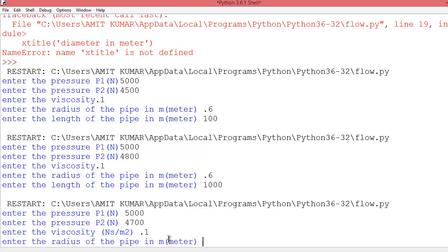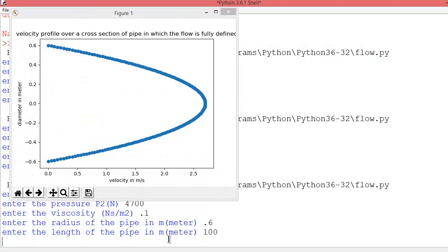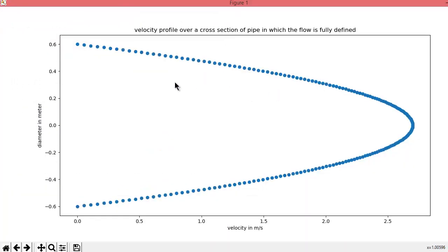Enter the radius of the pipe 0.6. Enter the length of the pipe. Let's say 100.